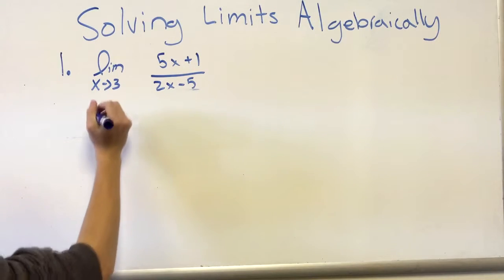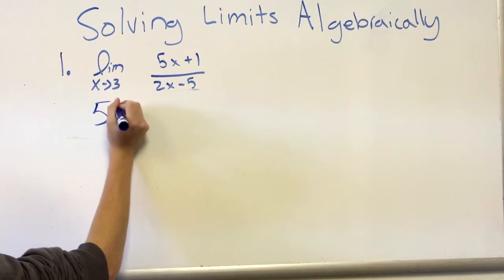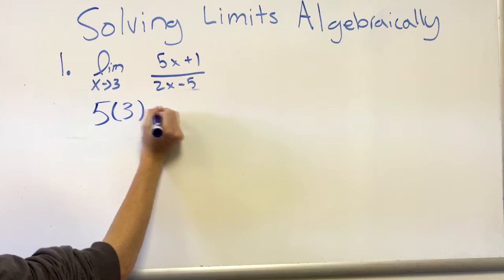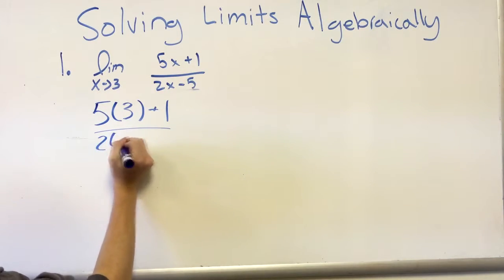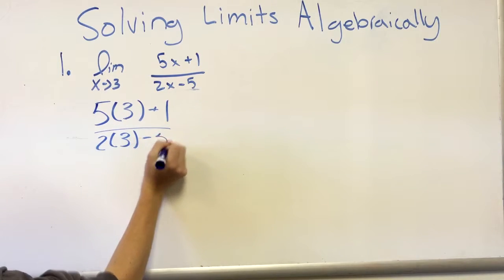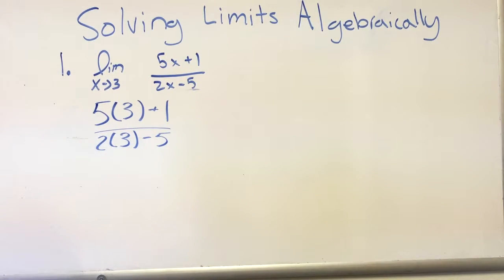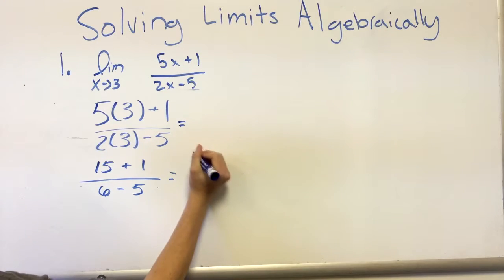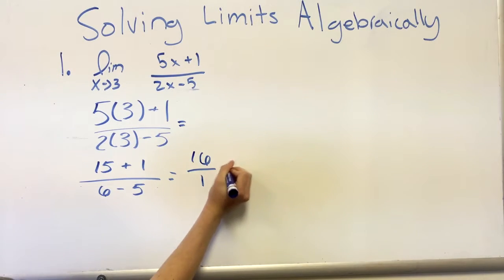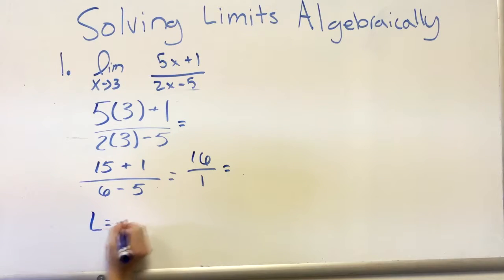To solve this problem, you will need to plug in 3 for x. Now multiply 3 by 5 plus 1, and then 2 by 3 minus 5. Simplify the problem so it should be 16 over 1. 16 over 1 equals 16. 16 is your limit.